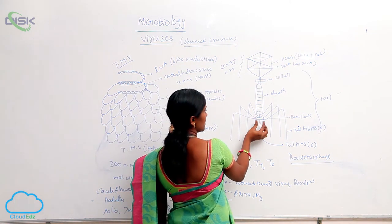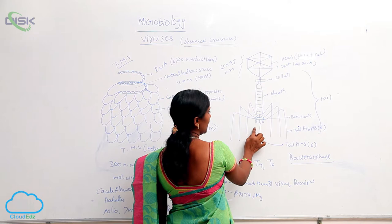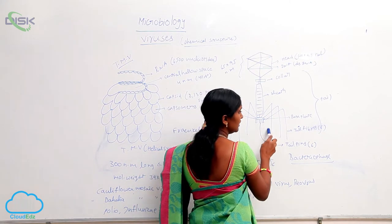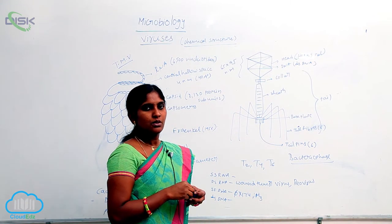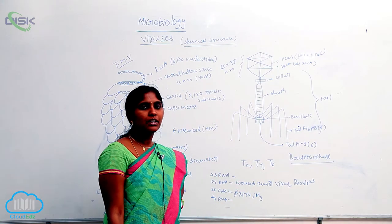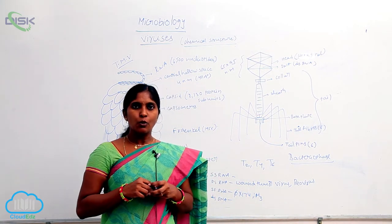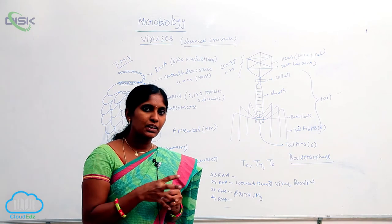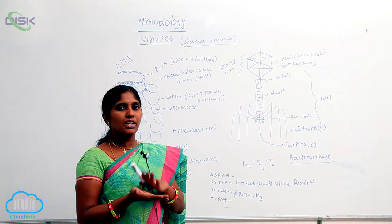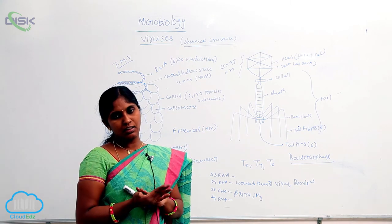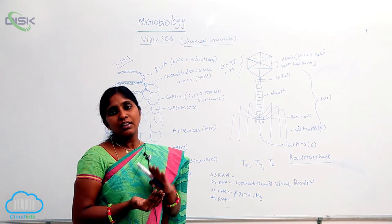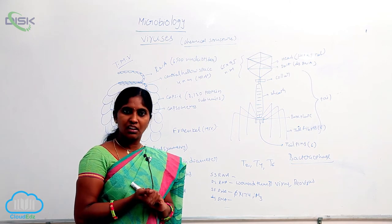Here one is plate, tail plate. The tail plate has six tail pins and it has six tail fibers also. This complete plate is called base plate. Why the base plate is needed? While it infects the bacteria, the base plate can easily attach to the surface of the bacteria. It means it promotes easy adsorption on the surface of the bacteria.